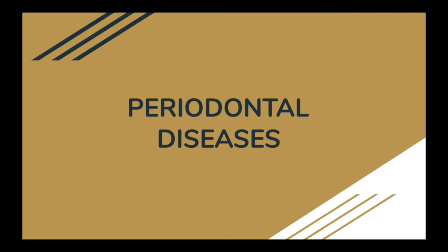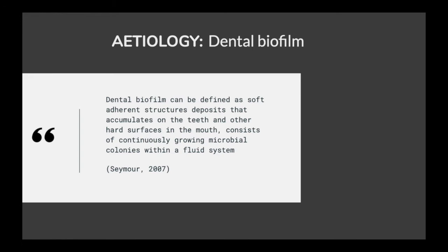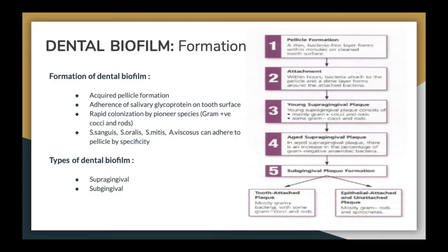For the next part, we will discuss periodontal problems and oral mucosal problems in more depth. Periodontal disease can be classified into two: gingivitis and periodontitis. Gingivitis is sub-categorized into dental plaque-induced gingival disease and non-plaque-induced gingival disease. Periodontitis is subdivided into: chronic periodontitis, aggressive periodontitis, and periodontitis as a manifestation of systemic disease. For the etiology of periodontal disease, both gingivitis and periodontitis share the same etiology: dental biofilm, also known as plaque — a soft, adherent deposit that accumulates on teeth or other surfaces in the mouth, consisting of growing microbial colonies within a fluid matrix.